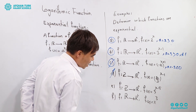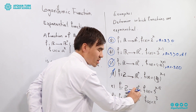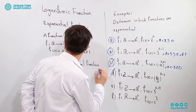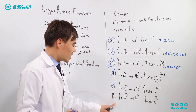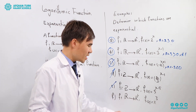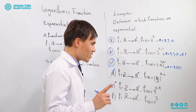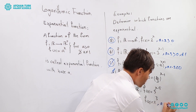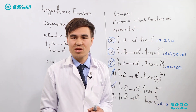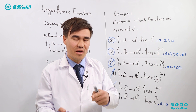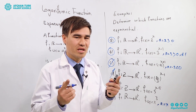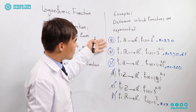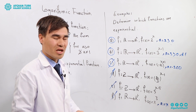The fifth example: f is defined from the integer numbers to the positive real numbers, with f(x) = 5^(x-1). Since the domain is integers, not real numbers, this is not an exponential function. The sixth example: f(x) = x^3. Here, the base is a variable — in exponential functions, the base must be a constant, not a variable. Therefore, this is not an exponential function. In summary, only the first two are exponential functions.